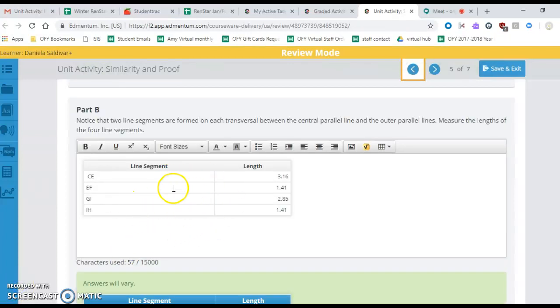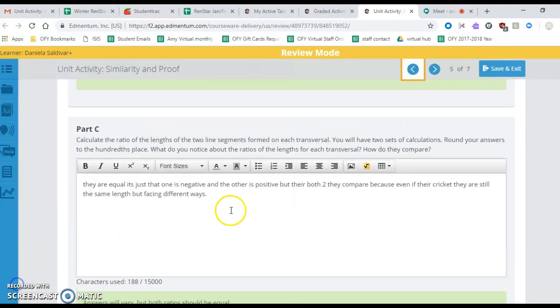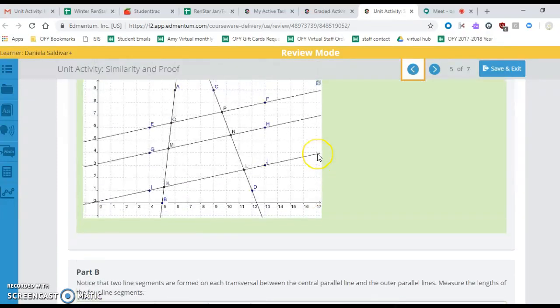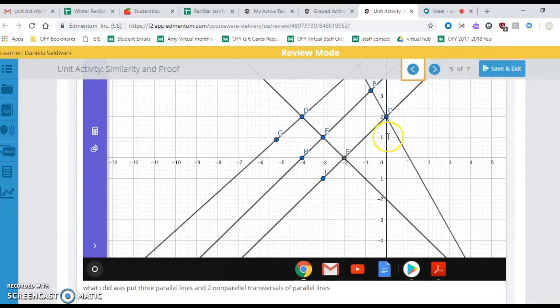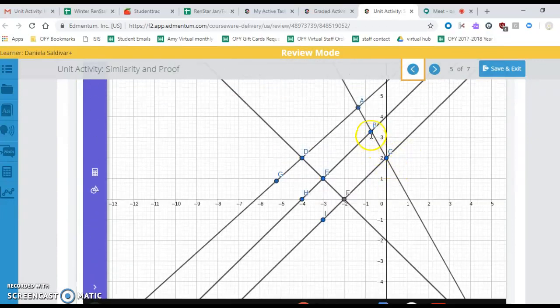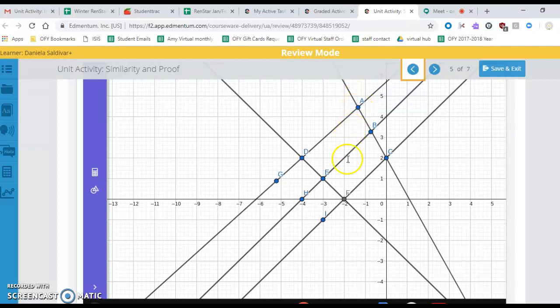So that will be what you put in this table right here. And for this one, I want you to show your calculations. So the ratio of the lengths of the two line segments formed on each transversal. So if we go up here, you're going to be doing CB divided by BA, and then you're going to be doing FE divided by ED.